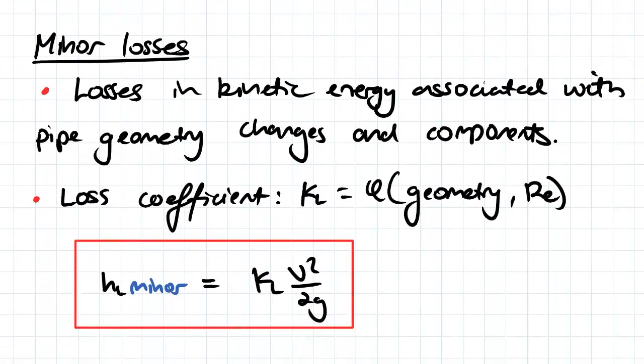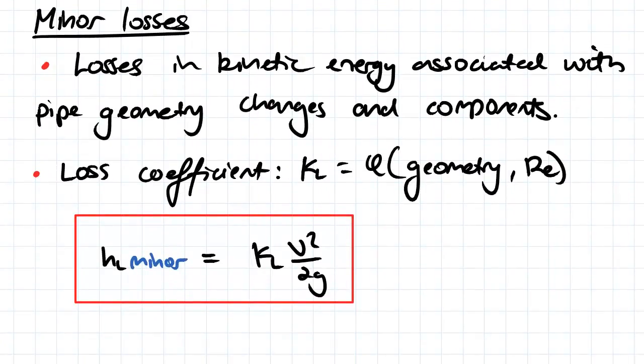So, minor losses, as we defined them two videos ago, they're losses in kinetic energy associated with pipe geometry changes and components.